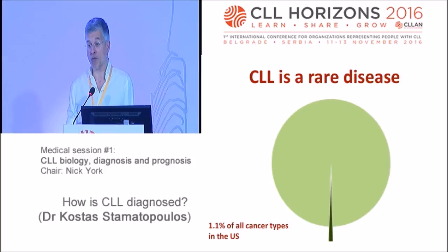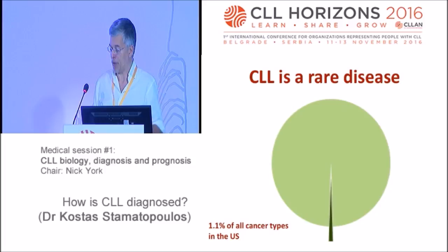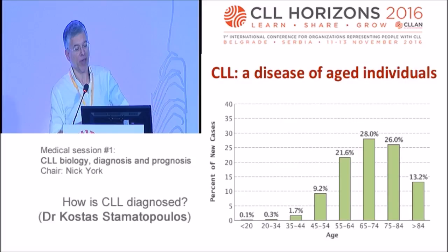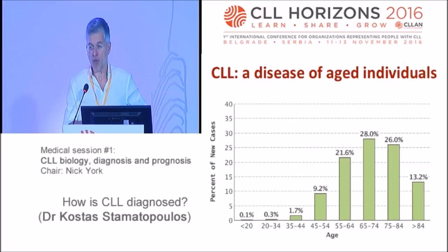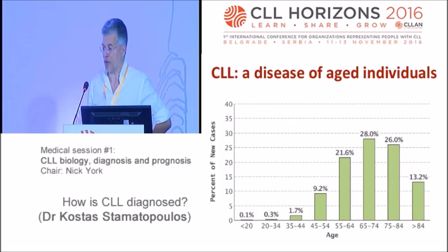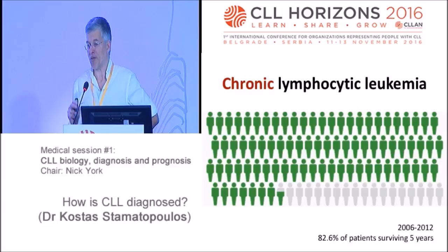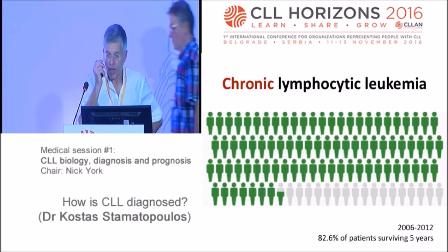Chronic lymphocytic leukemia is a very rare disease: four to five new cases per 100,000 individuals. This is the incidence in Europe and the US, among Caucasians, because if you go to the Far East, it's far less frequent there. And we shouldn't forget that it is a disease of aged individuals, with a median age of 72, although roughly one third of cases are diagnosed below the age of 65.